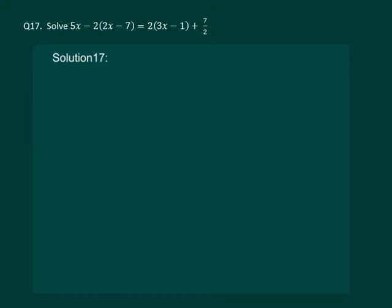Let us read the question. Solve 5x minus 2 times 2x minus 7 equal to 2 times 3x minus 1 plus 7 by 2.